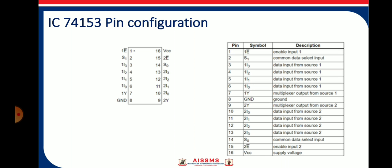So individual 4-to-1 again required four data lines. Out of that pin number 3, 4, 5 and 6 are the data lines for the first 4-to-1. And pin number 13, 12, 11 and 10 are the data lines for the second 4-to-1. One VCC pin and one ground pin is available.